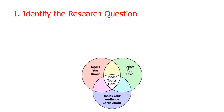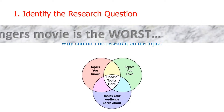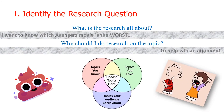The guide questions for step 1 include: What is the research all about? This should be answered by topic selection and general statement of the problem. Another question is: Why should I do research on that topic? This will be answered by the rationale, significance, and research background. For our research question, the research is all about wanting to know which Avengers movie is the worst, and the justification for doing this topic is simple.